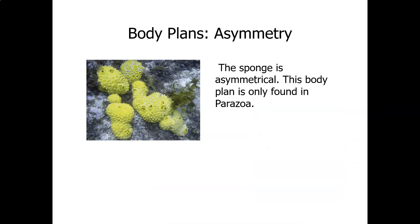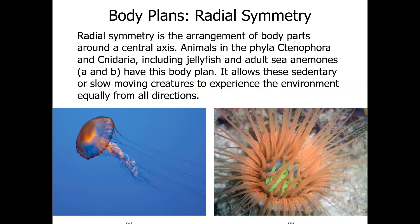The body plans of animals show great diversity. The first thing we're going to discuss is symmetry. If something has symmetry, that means it has two equal halves. A sponge cannot be divided to get two equal halves, so we say the sponge is asymmetrical — no symmetry. It is the only phylum in the parazoa, the animals that do not have symmetry.